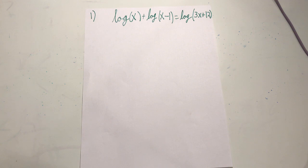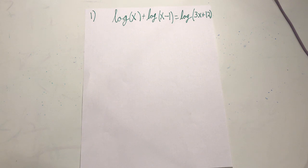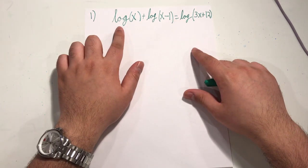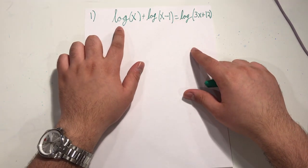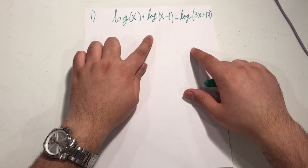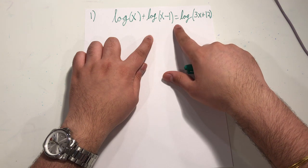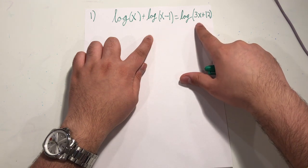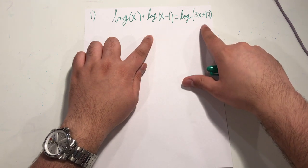It's kind of an extra technique I haven't shown yet. So if you're looking for that specific thing, I should have another video on my channel on that. So let's go through this first example. We have a logarithm of x plus a logarithm of x minus 1 equal to a logarithm of 3x plus 12.